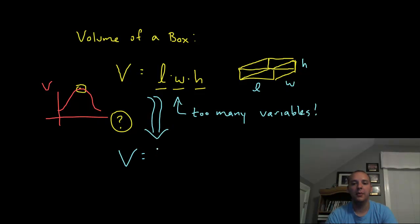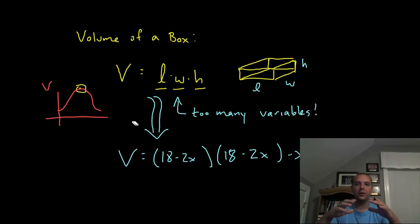The volume can now be written not as length times width times height with three separate variables, but 18 minus 2x times 18 minus 2x times x. So all three are in terms of a single variable. That's the key step. Once you've reduced the number of variables from a lot down to just one independent variable, then you can proceed like normal. The volume at the end of the day is really just a function of the size cutouts. It's really just a function of x.